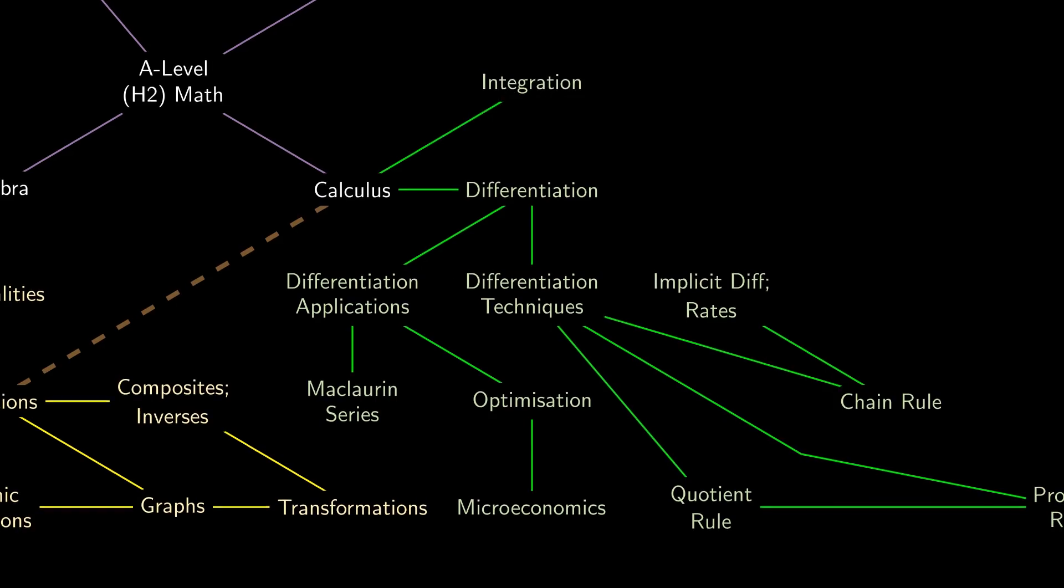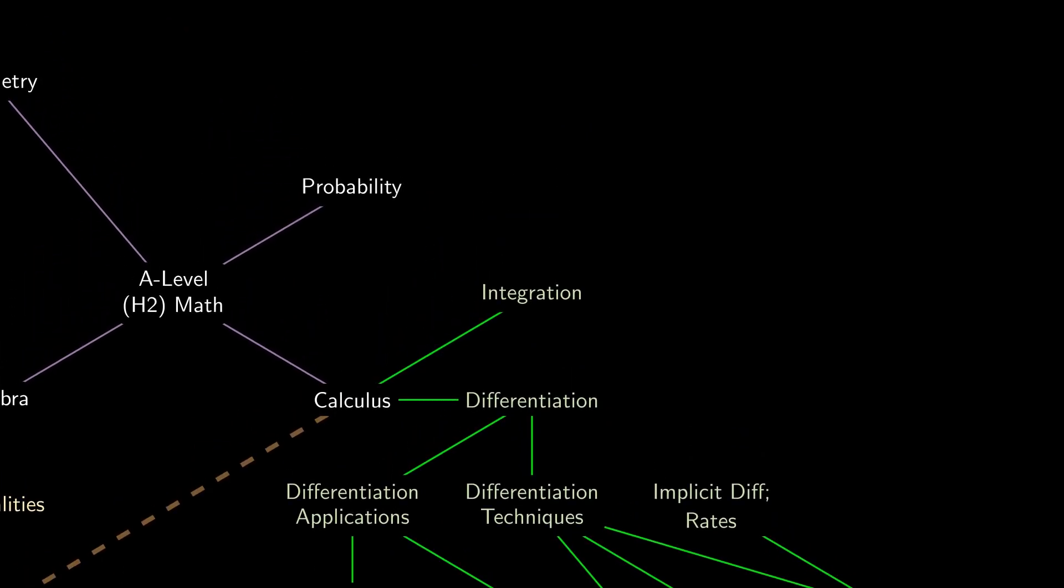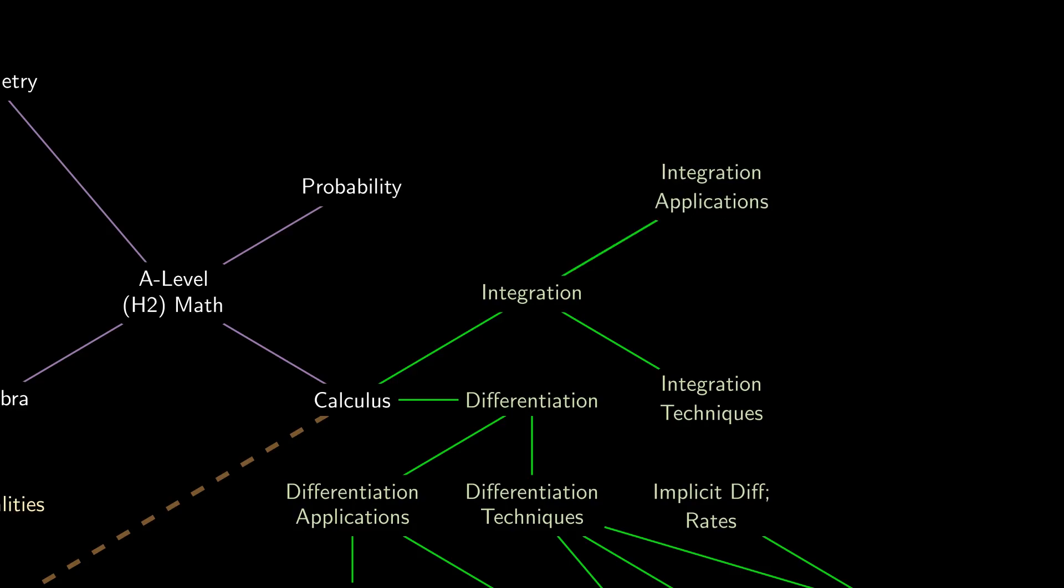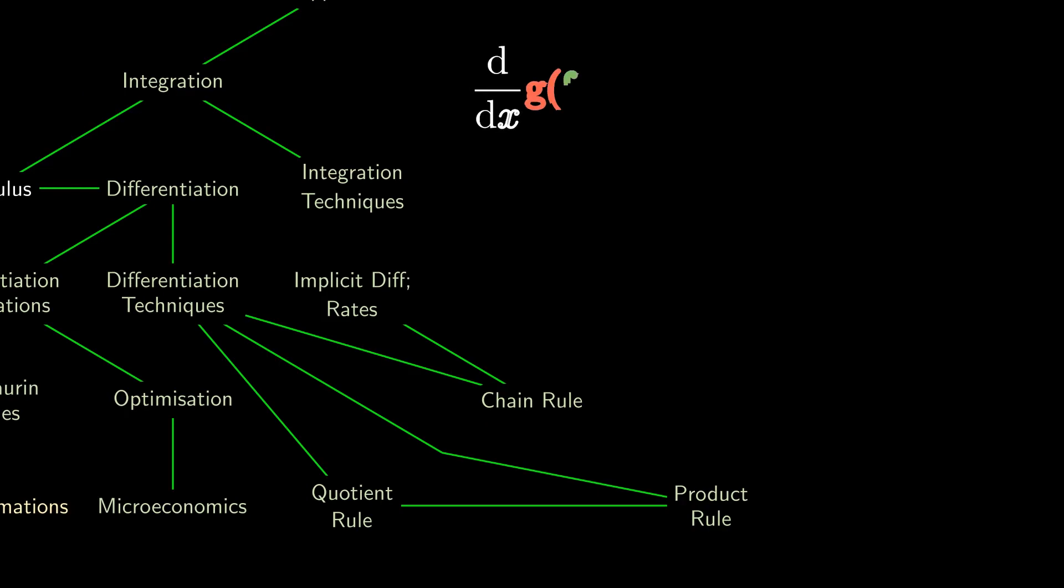The opposite of differentiation is integration, and similarly we want to know what we can do with integration and what we can solve using integration. Since one of the key results in differentiation is the chain rule, one of the key things we want to do is reverse the chain rule.